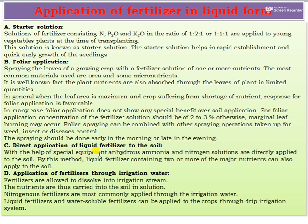The third method is direct application of liquid fertilizer to the soil. With the help of special equipment, anhydrous ammonia and nitrogen solutions are directly applied to the soil. By this method, liquid fertilizers containing two or more major nutrients can also be applied to the soil. In application through irrigation water, fertilizers are dissolved into the irrigation stream and the nutrients are carried into the soil in solution. Nitrogen fertilizers applied through irrigation water is called fertigation, and liquid or water-soluble fertilizers can also be applied through drip irrigation systems.